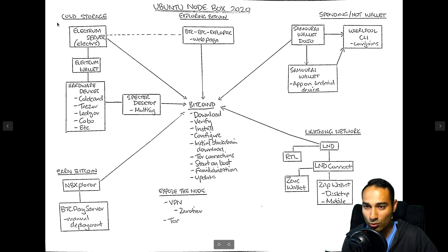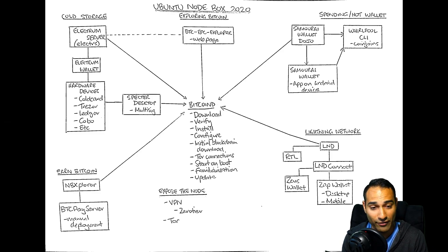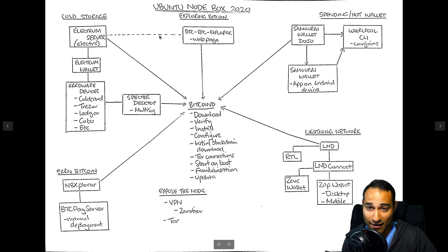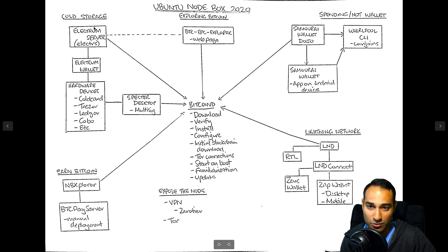That completes the cold storage side of things. Then we'll move on to exploring Bitcoin, which is a piece of software called BTC RPC Explorer — a block explorer. It's a web page that allows you to view the status of your node in a nice graphical manner: how big the blockchain is, lots of stats you can pull in, as well as exploring transactions all the way back to the coinbase. It will also have a link through to your Electrum server, so enhanced transaction and address details are queried from your Electrum server and picked up by BTC RPC Explorer.